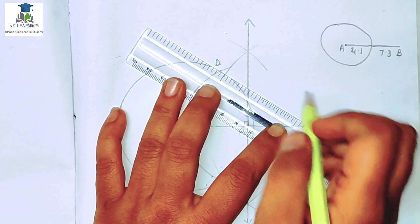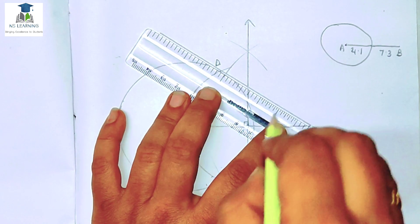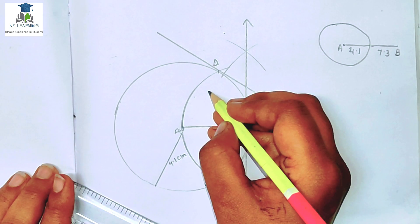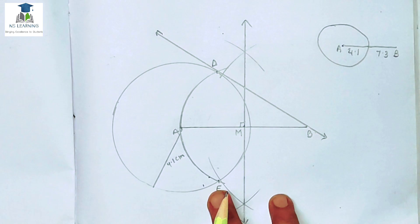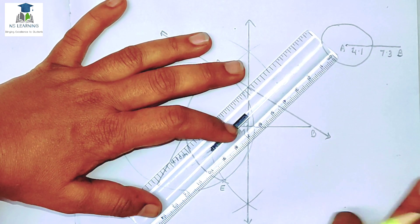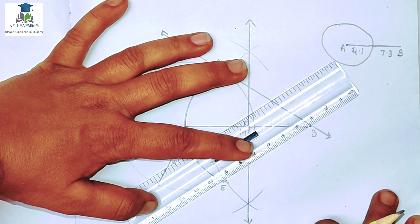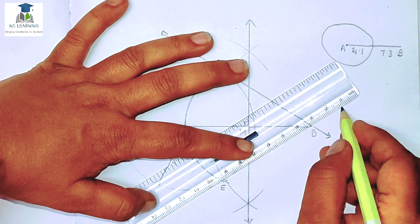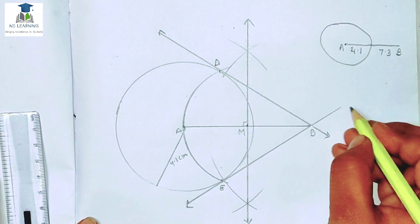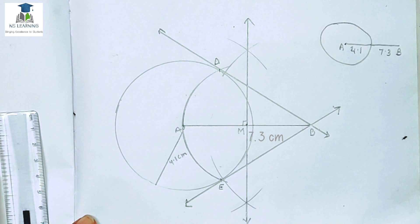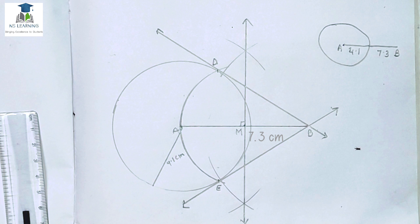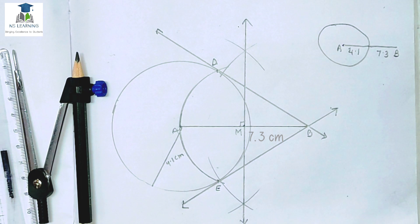Tangent एक ऐसी line है जो circle से touch होकर जाती है — ना तो वो circle से दूर होती है, ना circle के inside होती है, बस touch करके चले जाती है। Same procedure E point के साथ भी। दो tangent इसलिए draw किए क्योंकि question में 'tangents' बोला है — अगर सिर्फ tangent होता तो एक draw करना था। I hope समझ में आया। मिलते हैं next video में और भी interesting questions के साथ। Bye bye, do like, share and subscribe my channel, thanks for watching.